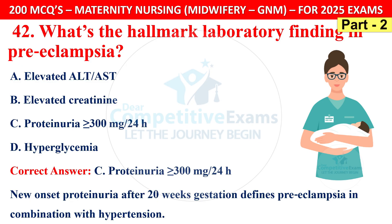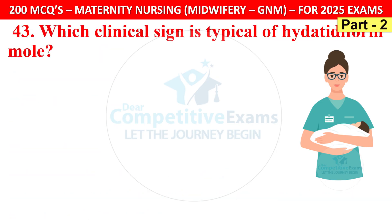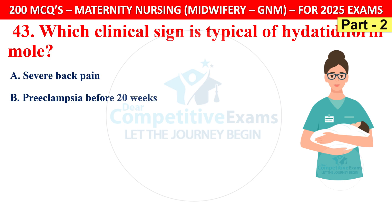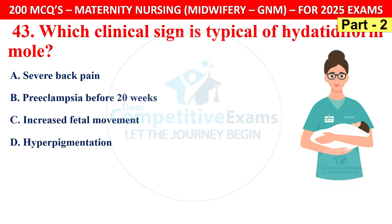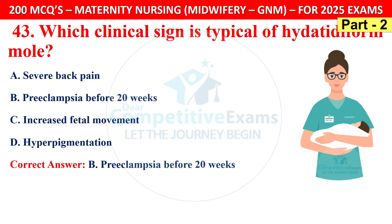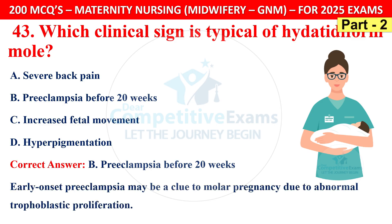Question 43: Which clinical sign is typical of a hydatidiform mole? Options are severe back pain, pre-eclampsia before 20 weeks, increased fetal movement, or hyperpigmentation. The correct answer is B — pre-eclampsia before 20 weeks. Early-onset pre-eclampsia may be a clue to molar pregnancy due to abnormal trophoblastic proliferation.